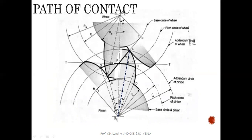When the gear pair is in the mating position, the pitch circles of the gear and pinion mate at one common point called the pitch point P. The tangent drawn through this pitch point makes an angle theta with the common line, which is the line passing through the pitch point and normal to the point of contact. Capital letters indicate radii for the gear's pitch, addendum, and dedendum circles; small letters indicate radii for the pinion.